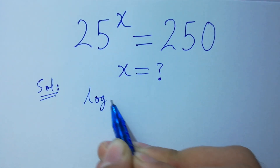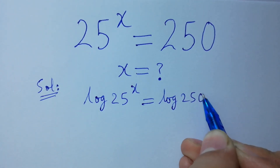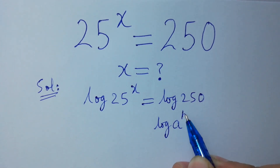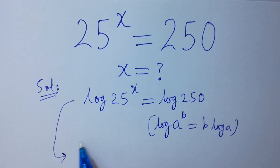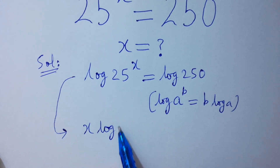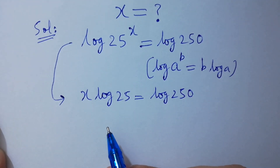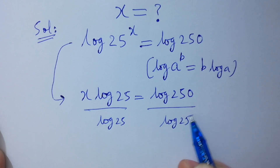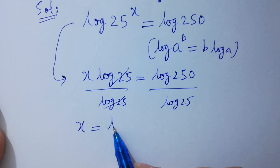Log 25 to the power x equals log 250. Since log a to the power b equals b log a, so log 25 to the power x will be x log 25 equals log 250. Dividing both sides by log 25, log 25 and log 25will be cancelled, and we get x equals log 250 over log 25.